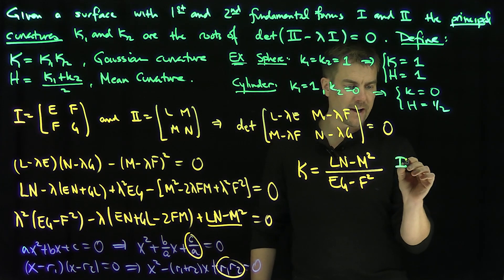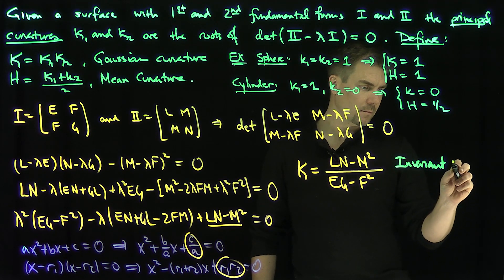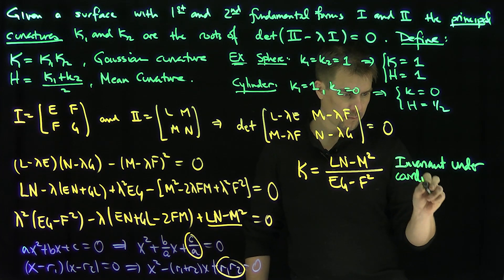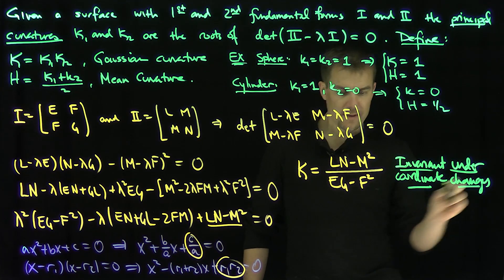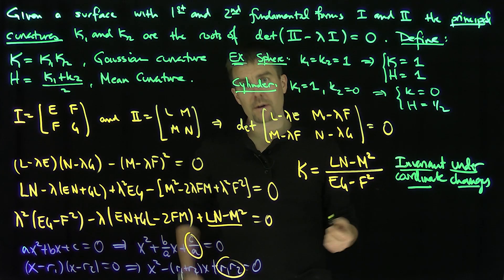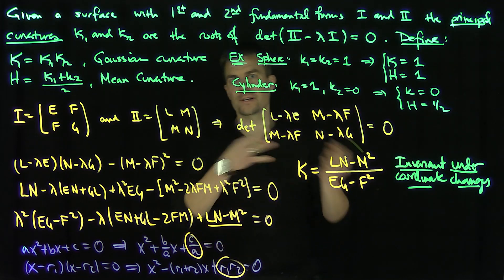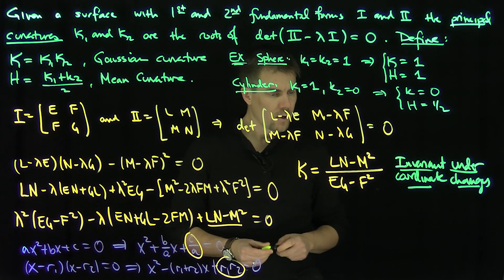This expression is invariant under coordinate changes. We proved that in previous video. That is very important. In other words, the denominator and the numerator transform in exactly the same way. So you get a cancellation. Assuming it's orientation preserving. So again, I always have this negative sign issue, which is constantly plaguing me.